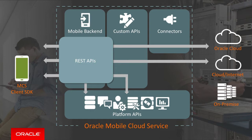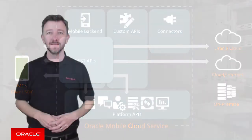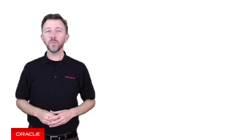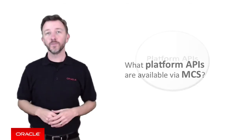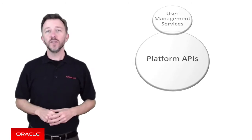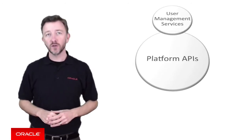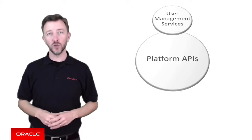Taking a step back to the broader discussion on the MCS platform APIs, any discussion on the platform APIs is always coupled with a discussion on the MCS mobile client SDK — they are closely related. So, what platform APIs are currently available through MCS? Well, the first platform API is that of User Management Services, commonly known as the UMS API for short.